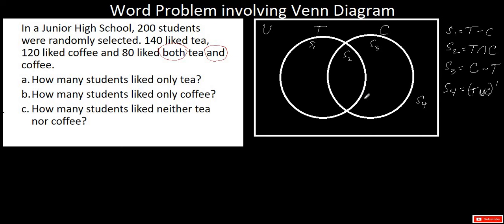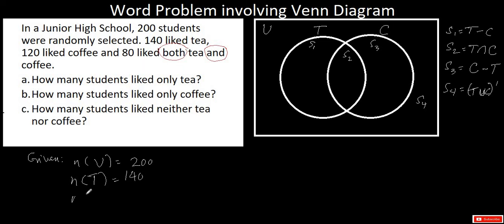Next, we determine the givens so that we can start populating our Venn diagram. The cardinality of the universal set is 200. We let T be the set of students who like tea, so the cardinality of set T is 140. The cardinality of set C — students who like coffee — is 120. The keyword 'both tea and coffee' means intersection, so the cardinality of T intersection C is 80.